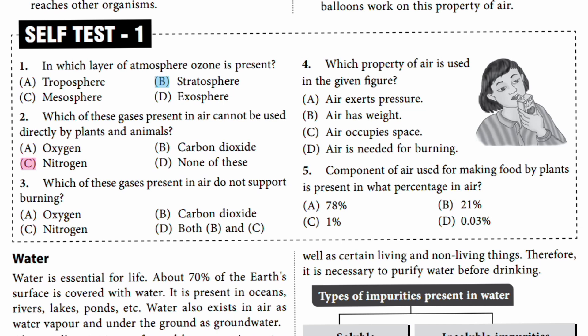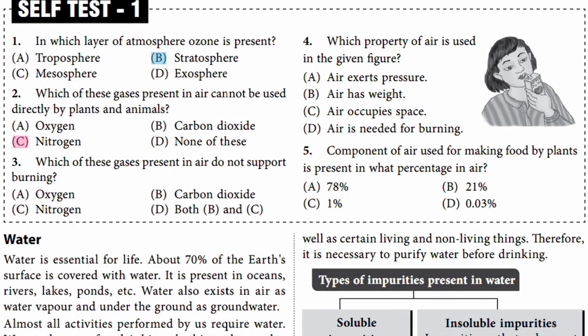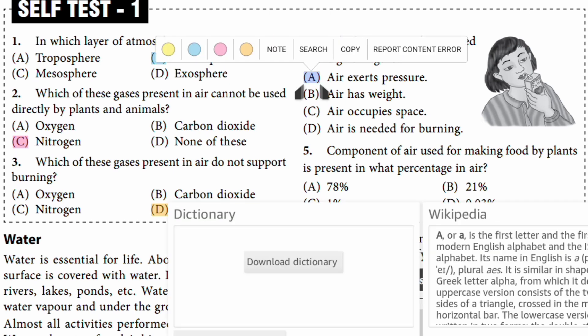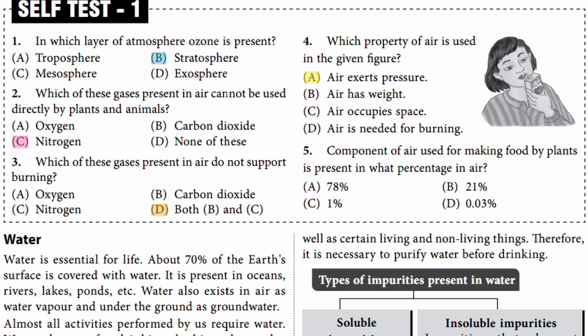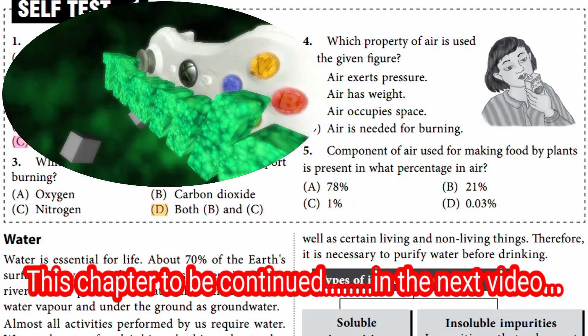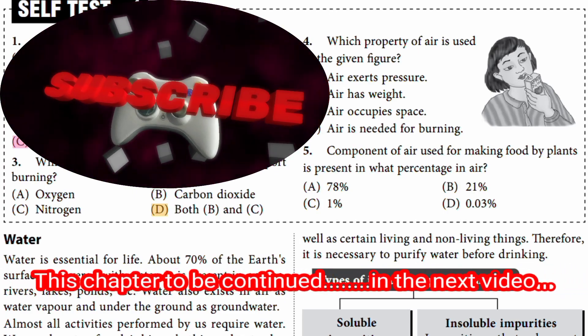Question three: Which gases present in the air do not support burning? We know that oxygen does support burning, but carbon dioxide and nitrogen do not. So the answer is D — both B and C. Next question: Which property of air is shown in the figure of a girl drinking juice? The answer is that air exerts pressure. Lastly, the component of air used by plants to make food is carbon dioxide, which is present at 0.03%. Nitrogen is 78%, oxygen is 21%, and all other gases make up 1%.